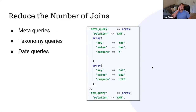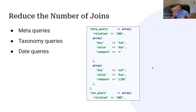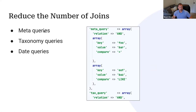The number of joins in a query will very directly impact performance — it may even be exponential. Here we see a meta query doing two comparisons, combined with a taxonomy query doing several comparisons. The more of those kinds of things in a single query, the slower it gets. It's important to avoid unnecessary joins. Meta queries, taxonomy queries, and date queries are the types to watch when checking yourself.